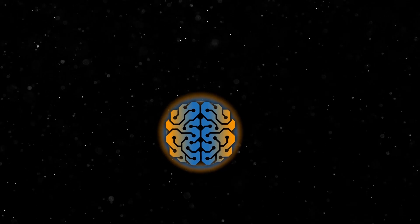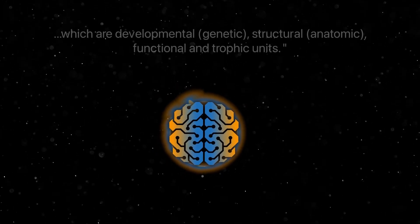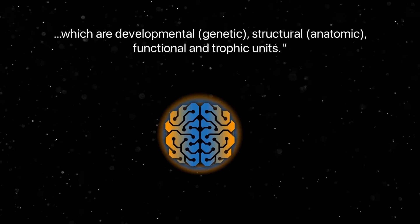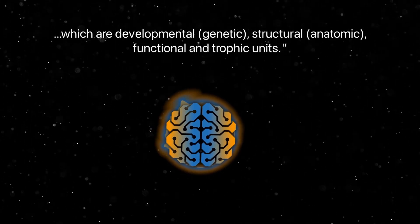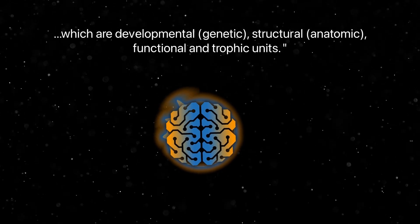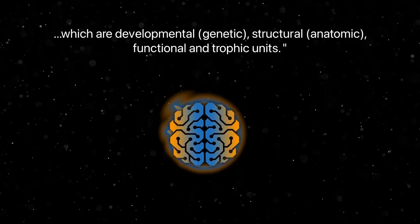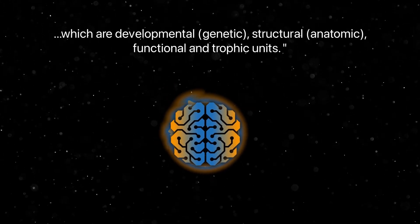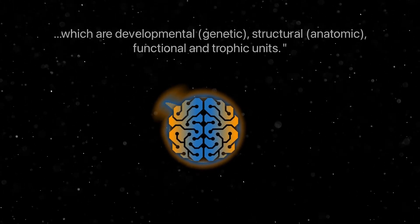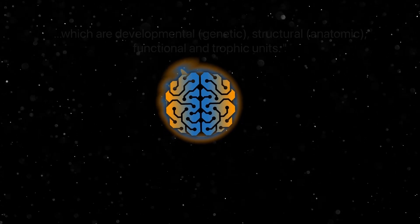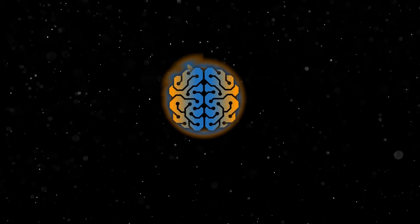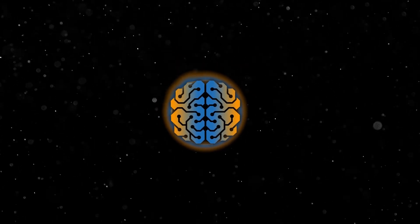Now, the last part of that sentence: neurons are the developmental, structural, functional, and trophic units of the nervous system. All this says is that neurons are the reason their nervous system can develop itself, giving it structure, and allowing the whole system to function. From my point of view, the trickiest part to understand in this sentence is the trophic units bit. I mean, what does trophic even mean?